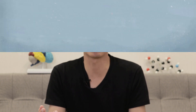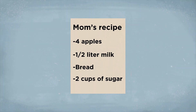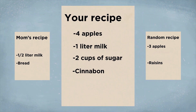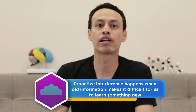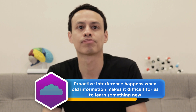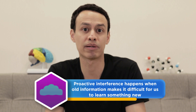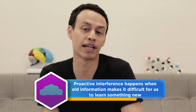For example, let's say you're going grocery shopping to buy the ingredients for your mom's apple cake recipe. But before shopping, you come across a new apple cake recipe. You might end up buying items from the new recipe thinking it is part of your mom's recipe — that's retroactive interference. If older memories interfere with the encoding of newer memories, we call that proactive interference. In that case, some ingredients from your mom's recipe might slip into the new recipe you wanted to try.